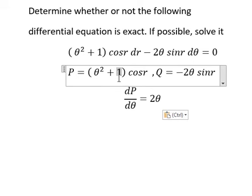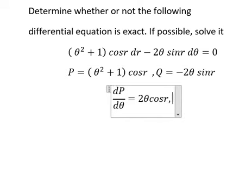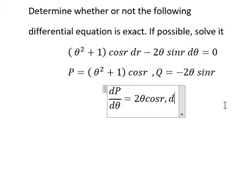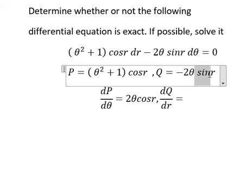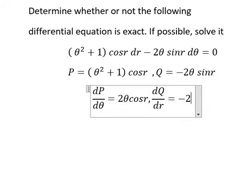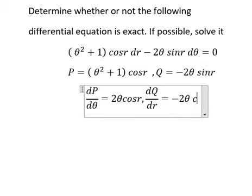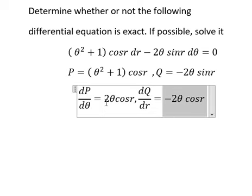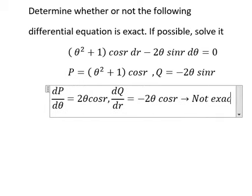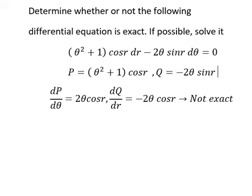The constant gives zero, and we have cosine r. For d theta, that means we need to do the first derivative of Q with respect to r. We have only sine r in here. The first derivative of sine r gives cosine r. So we can see that this one and this one are not the same — so this equation is not exact.